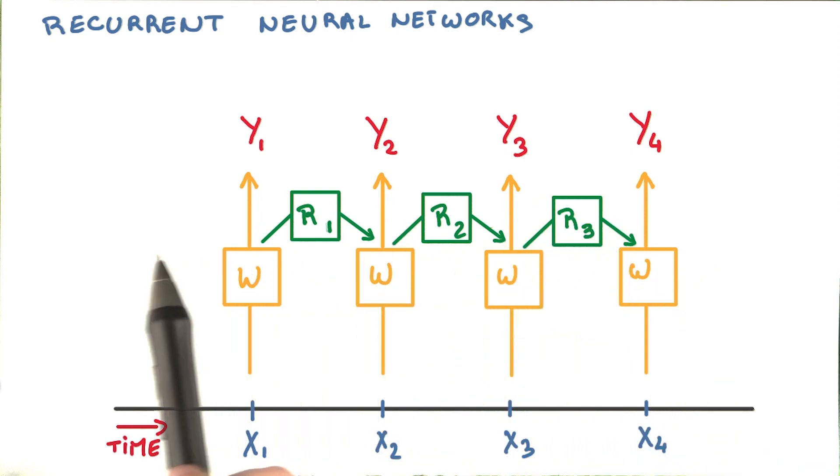Now, you would need a very deep neural network to remember far in the past. Imagine that this sequence could have hundreds, thousands of steps. It would basically mean to have a deep network with hundreds or thousands of layers.